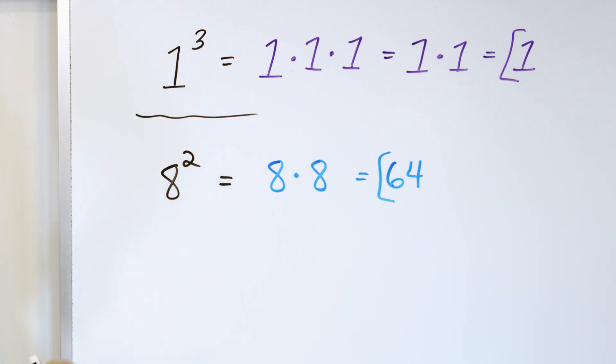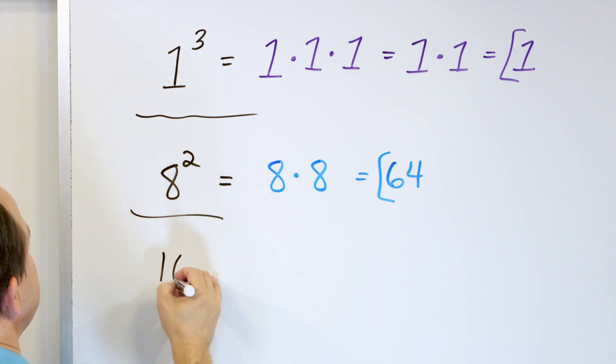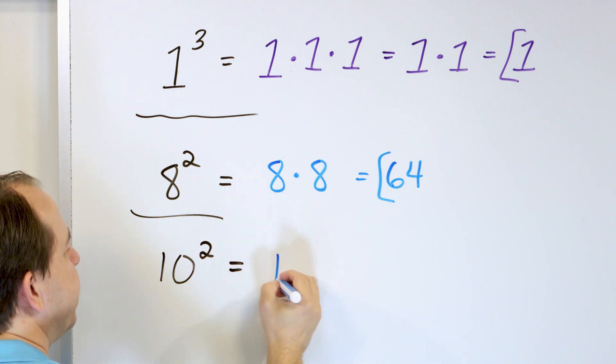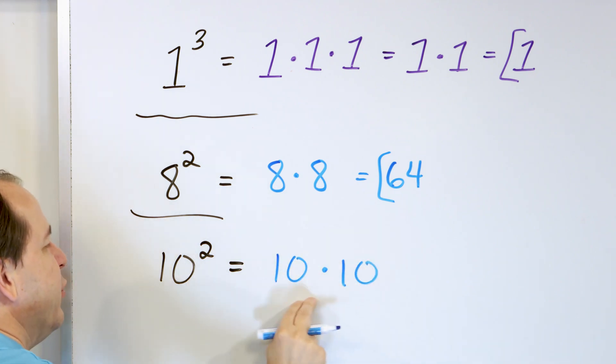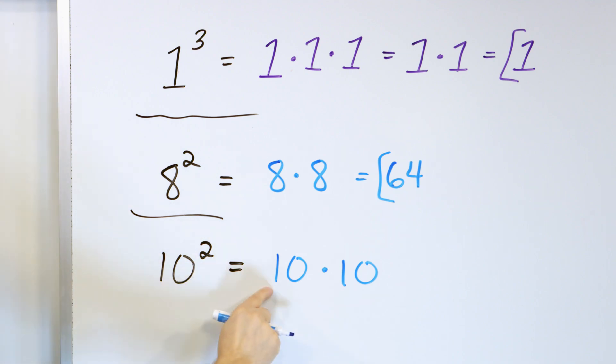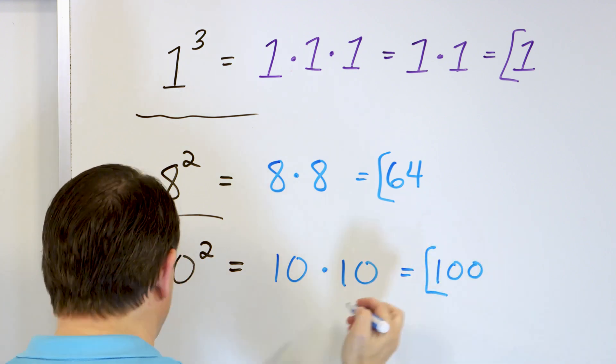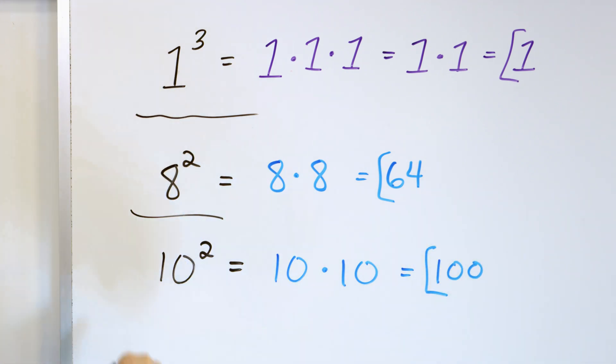What about 10 to the power of 2? Same thing. The bottom number is the base; we multiply it by itself, and we have 2 of them because the exponent is 2. 10 times 10 from your multiplication tables is 100, so the answer is 100. You might ask why we're doing power of 2 so many times — the truth is the power of 2 pops up so much in real life: in gravity, in electricity and magnetism. The power of 2 is just special; it pops up everywhere.